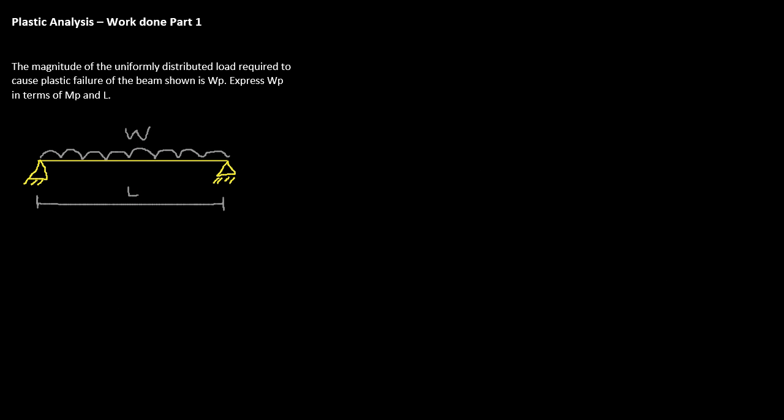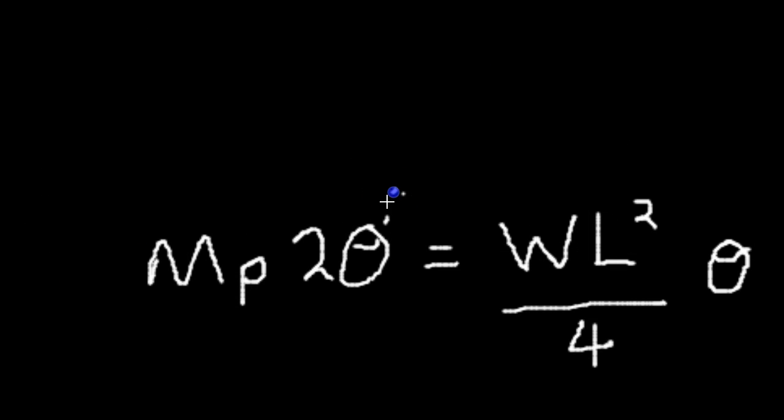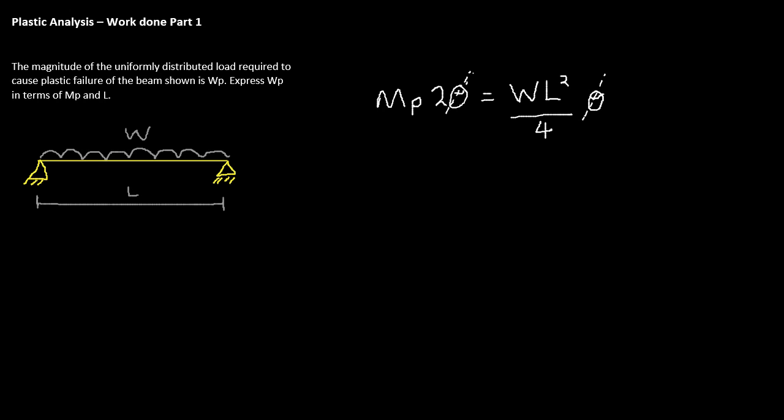The last step, then, in this example, is to equate our external and internal work. So, we can say our MP 2 theta is equal to our WL squared over 4 theta. We can cancel the thetas off because we have them on both sides. And in the question, it was asking for us to determine or express WP in terms of MP and L.